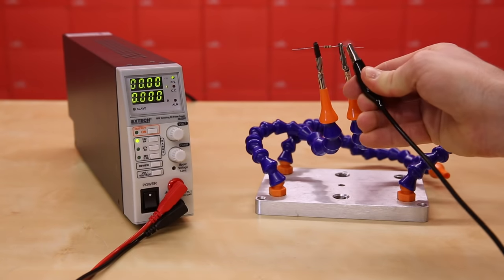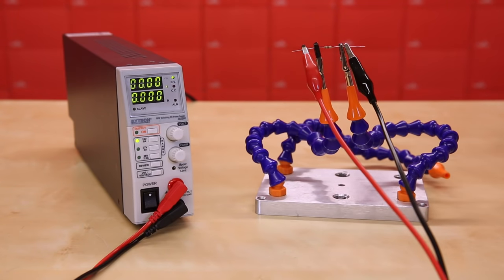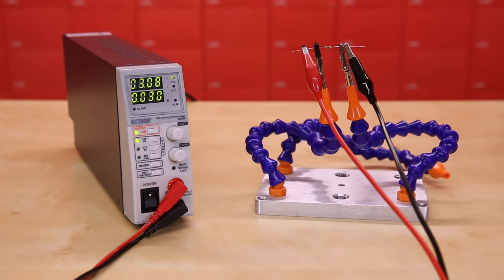Then we'll connect our circuit. In this case, I'm using a simple resistor as a load. Press the output on button and the power supply will give 3 volts across the terminals. Because this is a 100 ohm resistor, according to Ohm's law, we should see about 30 milliamps flowing through it. And sure enough, the power supply reports that it's providing about 30 milliamps.